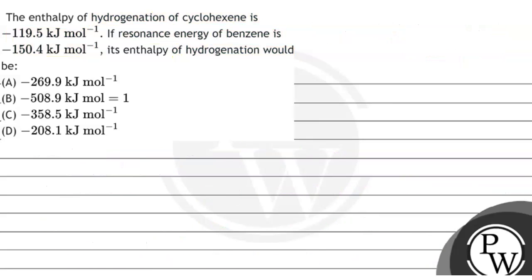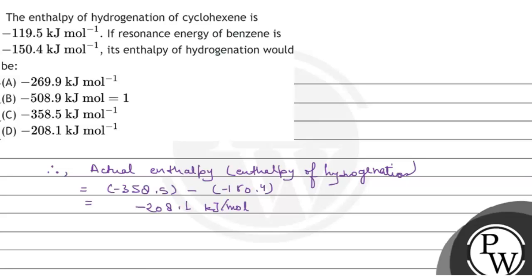Putting our values, the actual enthalpy of hydrogenation of benzene is -358.5 minus -150.4, which equals -208.1 kJ/mol. This is the final answer to the question.